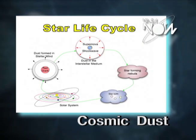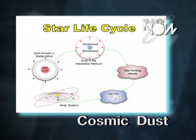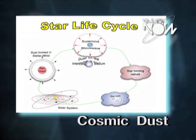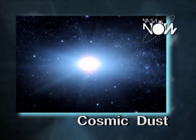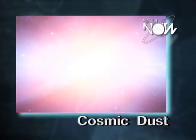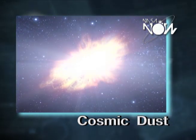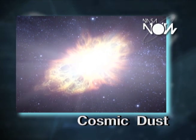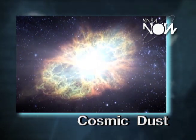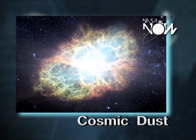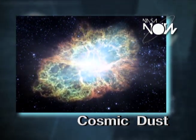Dust actually gets created in the death of stars, and there are two different kinds of deaths that we can talk about. In a more massive star, the star collapses and it dies in a massive explosion, and in that explosion there's a lot of elements that are created and then driven off, and they eventually become parts of interstellar dust.